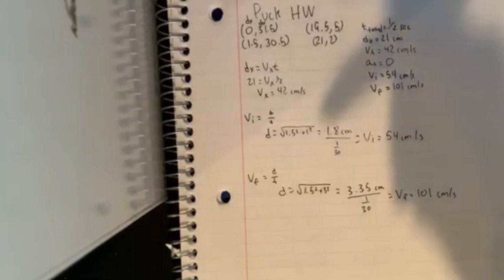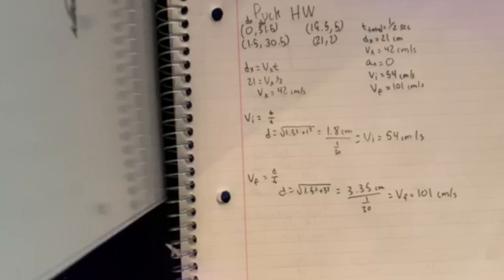Now we can start solving for the y direction. We know the v-initial x and v-final x is always going to be 42 because it doesn't change. To do that, I'm going to draw triangles just so it's easier to visualize.